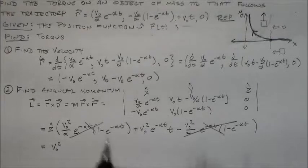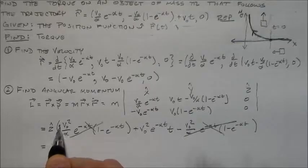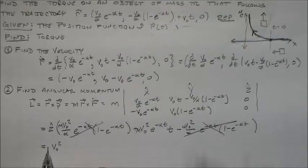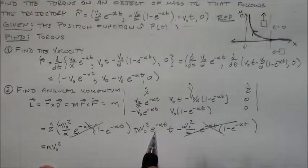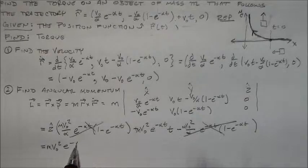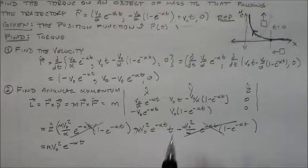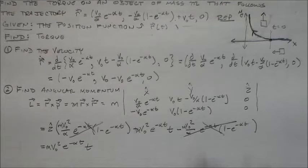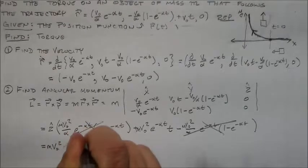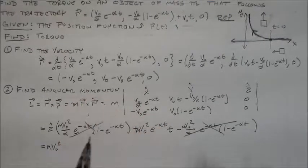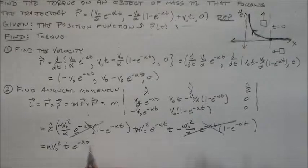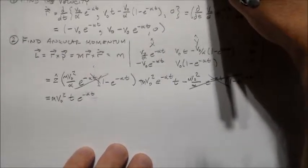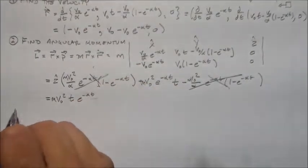So that angular momentum just ends up being v naught squared. And somewhere along the lines I lost my mass. So I lost my mass, but I regained my mass. So M v naught squared E to the minus alpha T times T. I think actually T times E to the minus alpha T is usually how it's written. So let's see what happens when I find the torque.